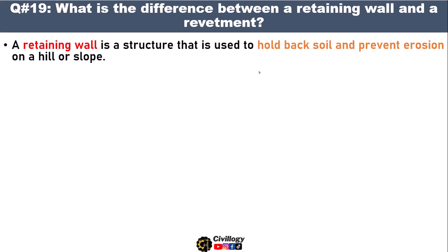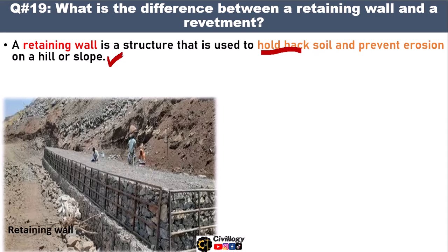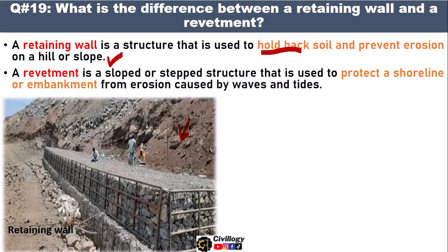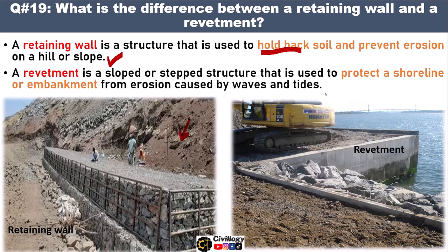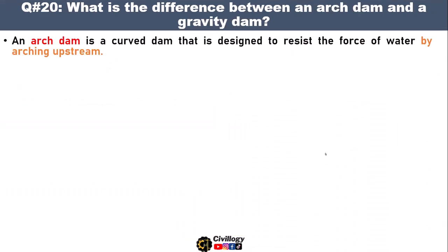Question number nineteen: what is the difference between a retaining wall and a revetment? A retaining wall is a structure that is used to hold back soil and prevent erosion on a hill or slope, and is used to stabilize the cutting side of a hill or support the side of a road. Whereas a revetment is a sloped or stepped structure that is used to protect a shoreline or embankment from erosion caused by waves and tides.